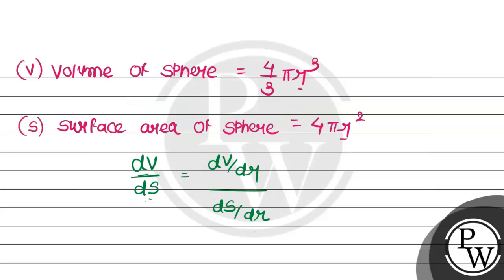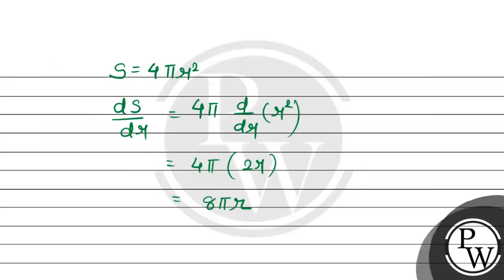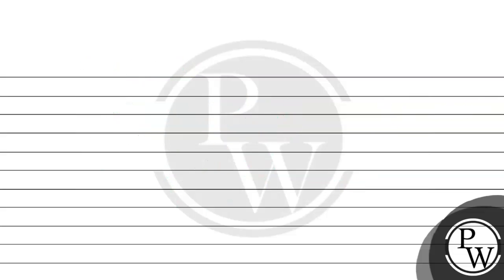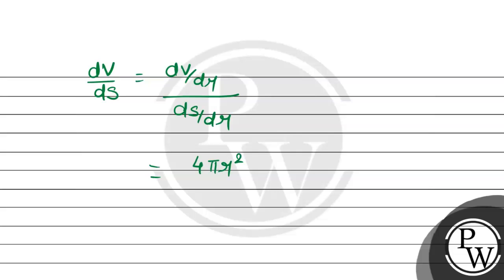We need dV/dS, so using the chain rule: dV/dS = (dV/dr) ÷ (dS/dr). Substituting the values: dV/dS = 4π r² divided by 8π r. Cancelling common terms, we get r/2.